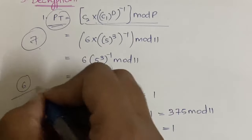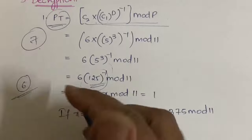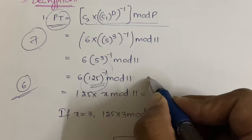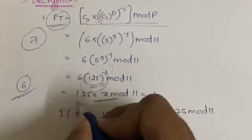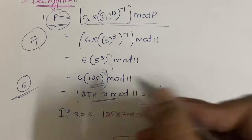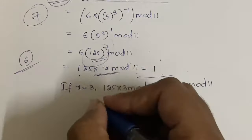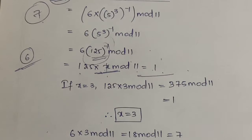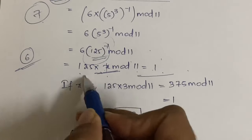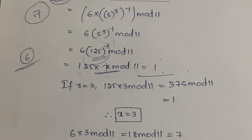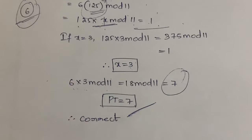The issue here is computing the modular inverse of 125. Set aside the factor of 6 temporarily. We need to find x such that 125 × x mod 11 = 1. Trying x = 1: 125 mod 11 ≠ 1. Trying x = 2: 250 mod 11 ≠ 1. Trying x = 3: 125 × 3 = 375, and 375 mod 11 gives us the inverse value needed to complete the decryption.